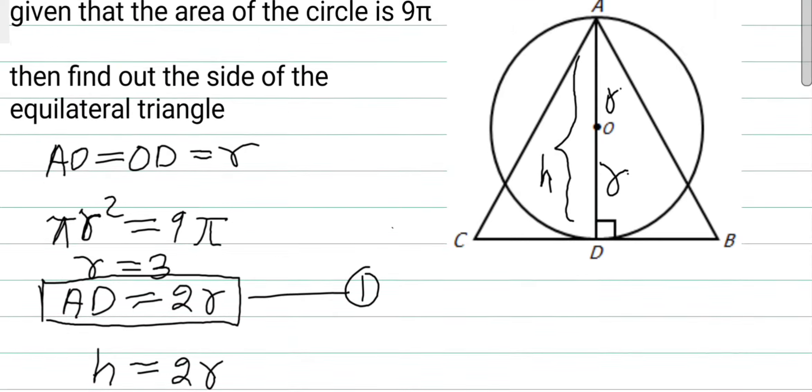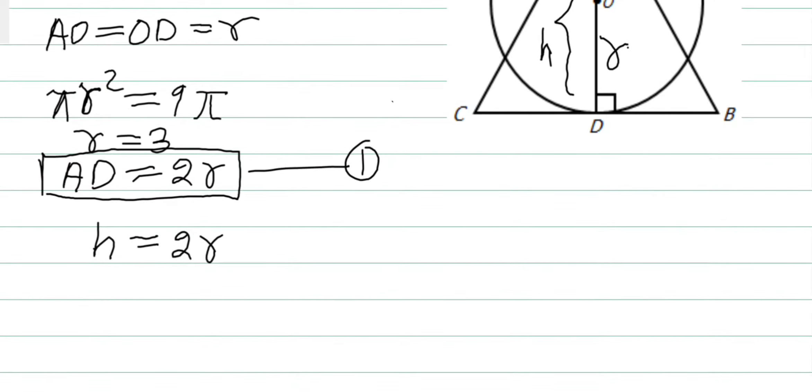So now we know that the height of an equilateral triangle having side A—if the side of the equilateral triangle equals A, then the height equals √3A/2.